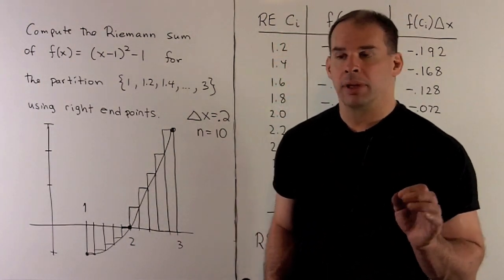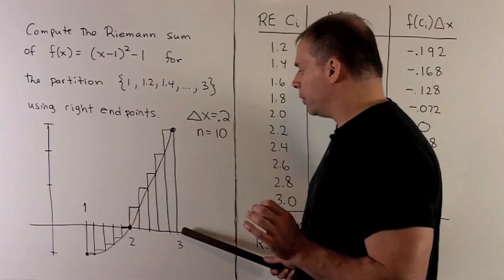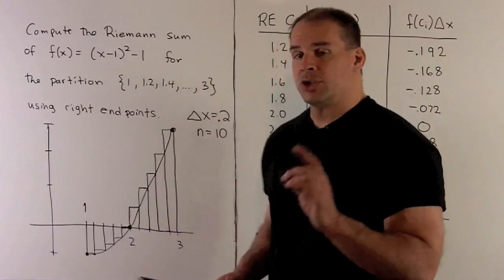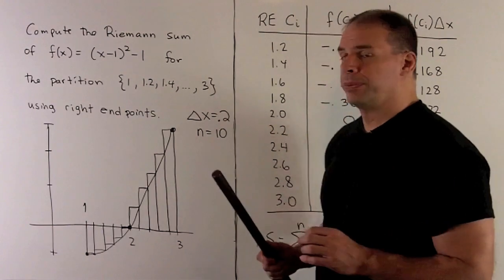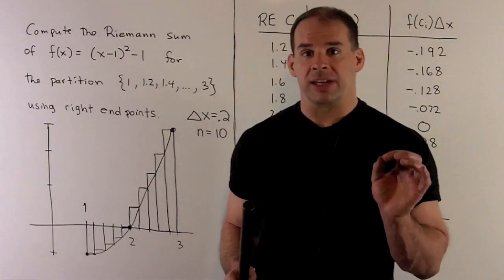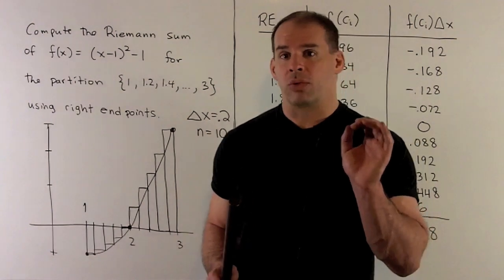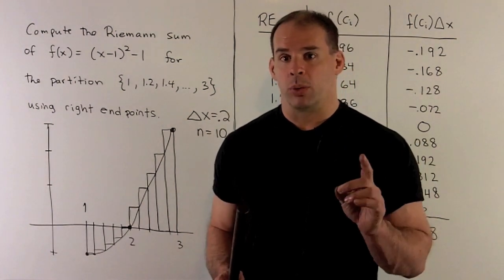I want 10 rectangles. The length of my interval is going to be 2, 3 minus 1, so I'll divide that by 10. Our delta x is going to be 0.2, so it's going to be the length of any base. Now, to get the height of the rectangles, we're going to use the right endpoints.